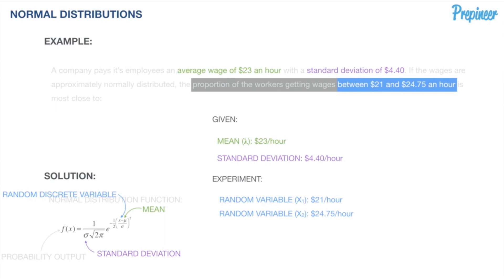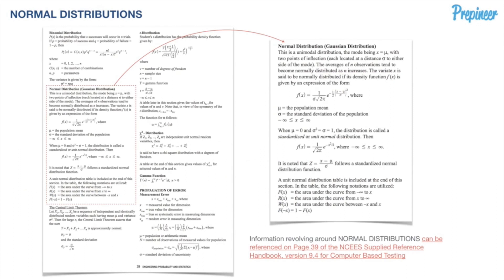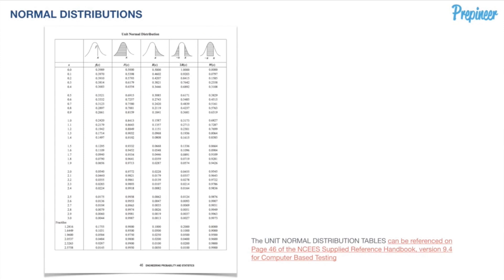We're looking for the proportion of workers falling between the pay of $21 and $24.75. We'll need to use our unit normal distribution table in the back of the book — flip to page 46. These are tables you need to become very familiar and comfortable with, understanding what each column means and represents.